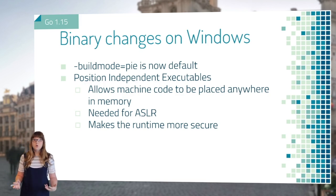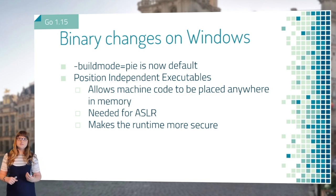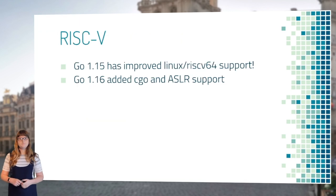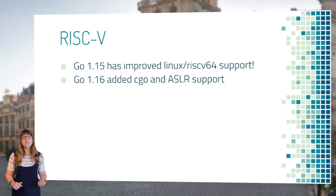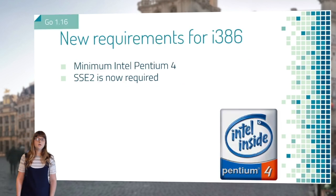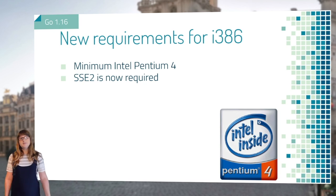PIE stands for position-independent executables, which allows your binary to be placed at any memory address in your computer's memory. This is needed if you want to use ASLR to randomize your memory, making the runtime more secure. There has also been improvement on RISC-V support — RISC-V is a completely open source architecture now supported by Go. Go 1.15 added many improvements on the Linux RISC-V 64-bit port, and Go 1.16 added cgo and ESLR support. Go 1.16 also now requires a minimum of an Intel Pentium 4 processor for x86 platforms, because SSE2 is now required.